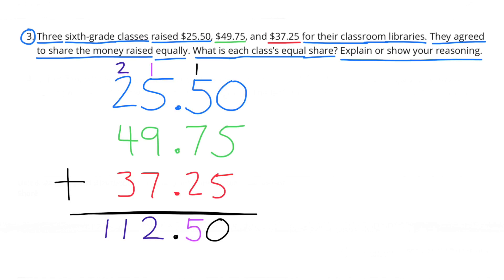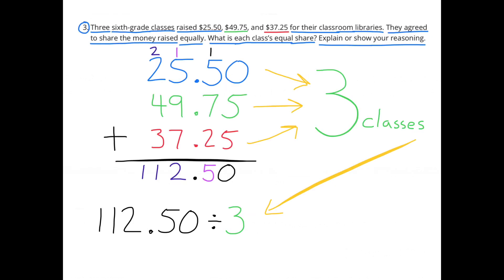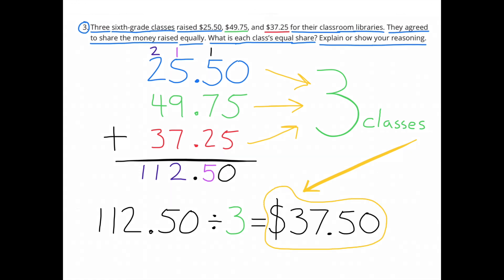$25.50 plus $49.75 plus $37.25 equals $112.50. The total amount of money that all three classes raised was $112.50. To figure out the equal share for each class, we have to divide that by 3. $112.50 divided by 3 classes. $112.50 divided by 3 equals $37.50. Each class gets $37.50.